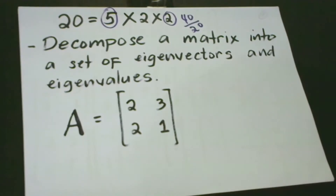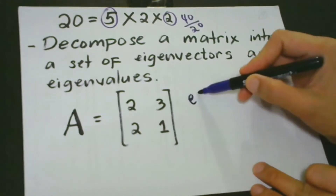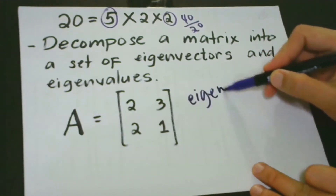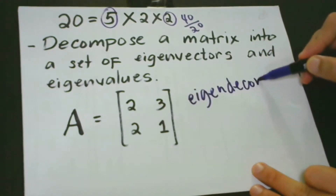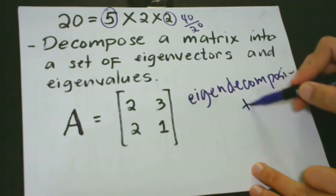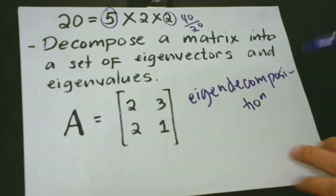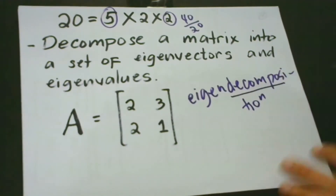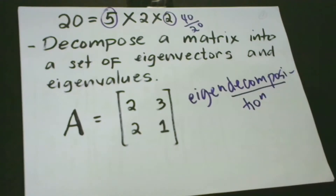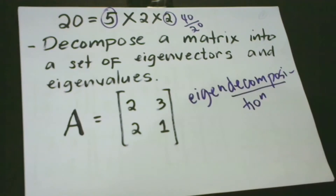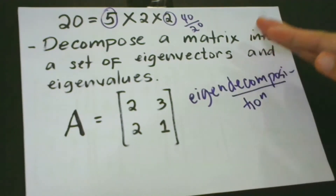This process is called eigendecomposition. So what is it? How do we decompose a matrix? We decompose a matrix into a set of eigenvectors and eigenvalues.